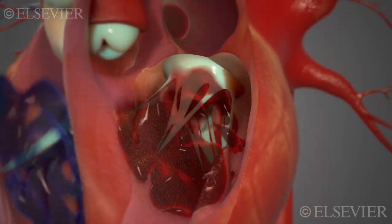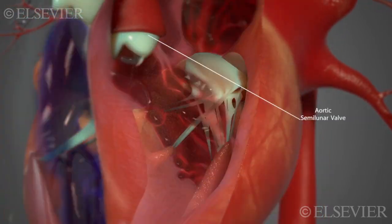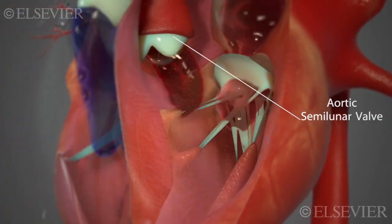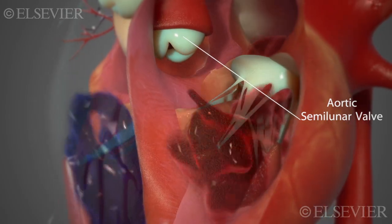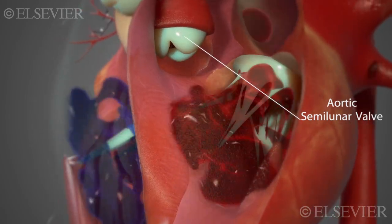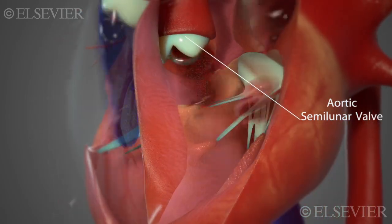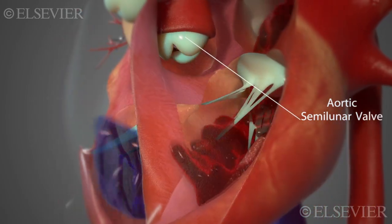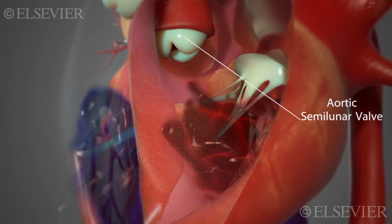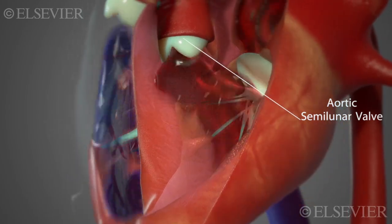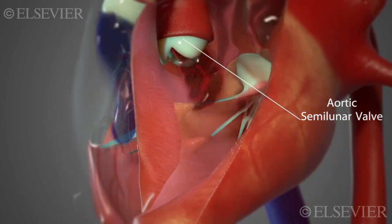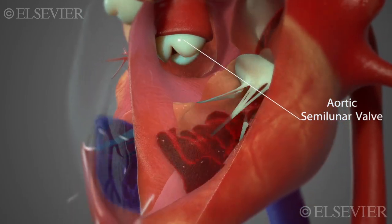Aortic insufficiency, also known as aortic regurgitation, happens when the aortic pulmonary valve leaks. It causes blood to flow backwards from the aorta into the left ventricle when the left ventricle relaxes.